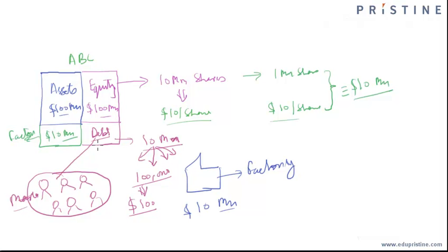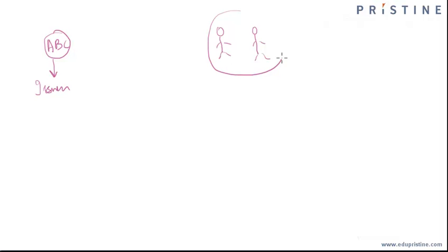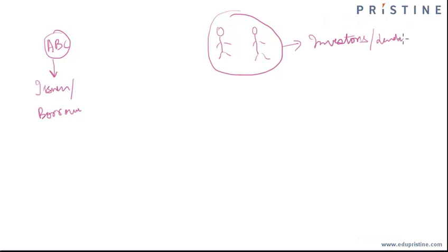Let us discuss this in detail. ABC company is the issuer of the bonds, and there are a group of people who have invested in this bond — these are the investors. The issuer is nothing but a borrower, and these investors are nothing but the lenders.